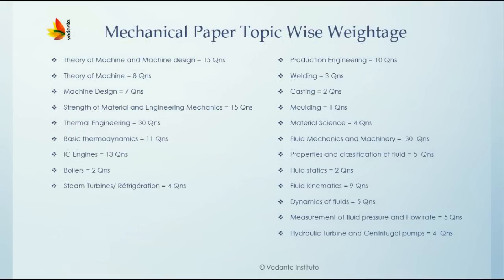Now let's analyze the Mechanical paper. The most important topic is Fluid Mechanics and Machinery, coming for 30 marks with 30 questions. After that, prepare Thermal Engineering, also for 30 marks, then Strength of Materials and Engineering Mechanics coming for 15 marks, then Production Engineering coming for 10 marks, and finally Theory of Machines and Machine Design, which together come for 15 marks.